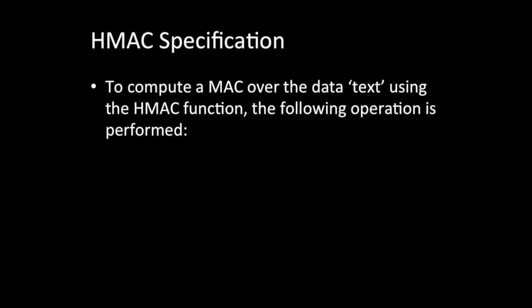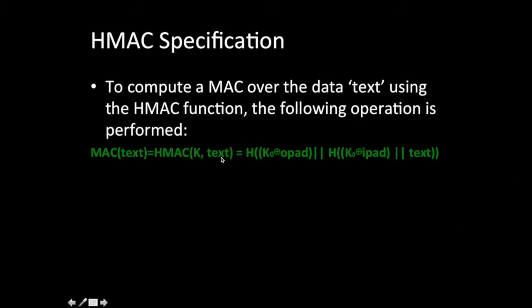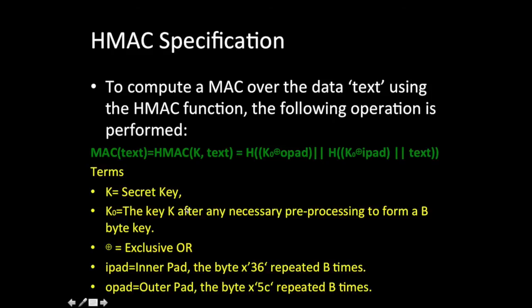Let's see how HMAC is calculated using the HMAC specification. To calculate HMAC of a data text using the HMAC function, the following operations are performed. There is a formula to calculate the HMAC where K is the secret key, K0 is the key after any necessary preprocessing to form a b-byte array. There is an exclusive-OR operation with opad (outer pad) and ipad (inner pad), which is the byte 0x36 repeated b times.